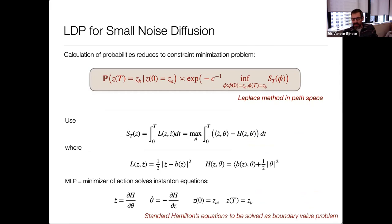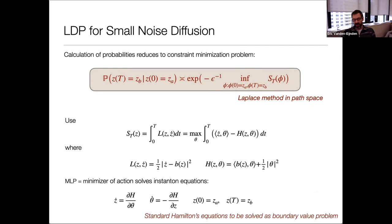In practice you can use a duality principle—writing the Lagrangian as the Legendre transform of a Hamiltonian—and then write down the Euler-Lagrange equations associated with this minimization problem. These are called the instanton equations: they are Hamilton's equations solved as a boundary value problem rather than an initial value problem, meaning you specify the position at initial and final time rather than the position and momentum at initial time. Here theta is the associated momentum and plays the role of optimal noise—the most likely realization of the noise that creates the event you're interested in.